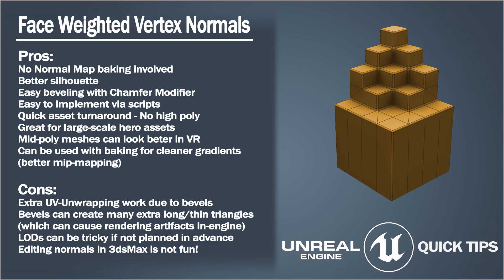The trade-offs: extra UV unwrapping because of the bevels means a bit more work — you're dealing with all those extra small rectangular bevel faces, going across the angle of the bevel rather than just breaking at a seam at the 90-degree corner. Depending on the asset that may or may not matter. Those bevels can also create a lot of extra long thin triangles, which can cause rendering artifacts in the game engine due to how they're shaded, though you can get away with it in a lot of cases.